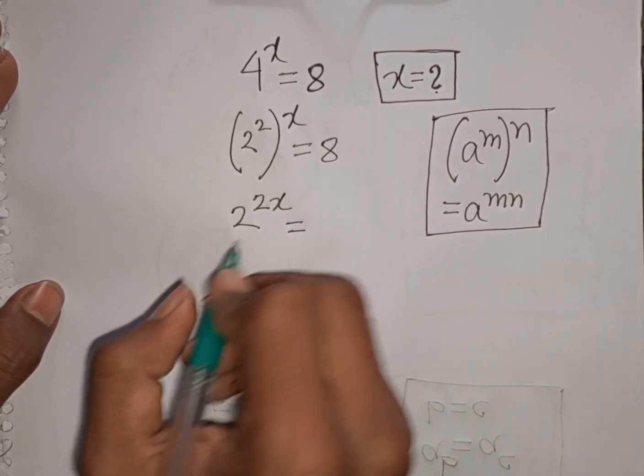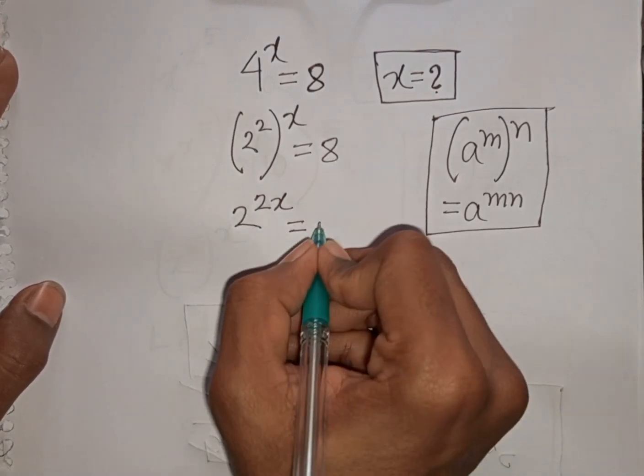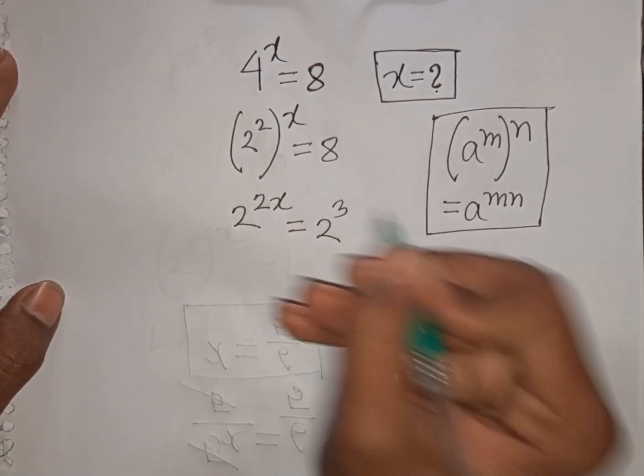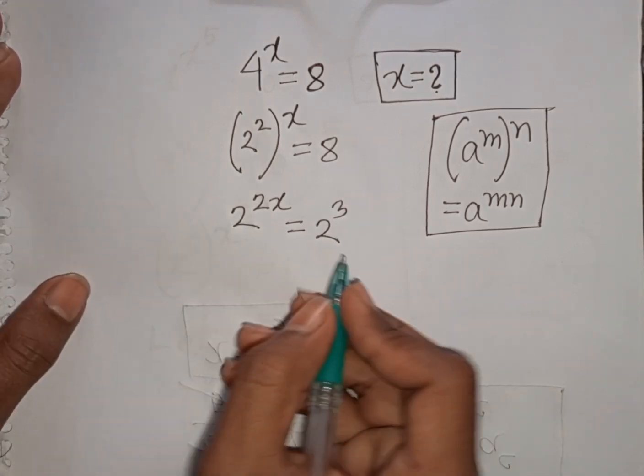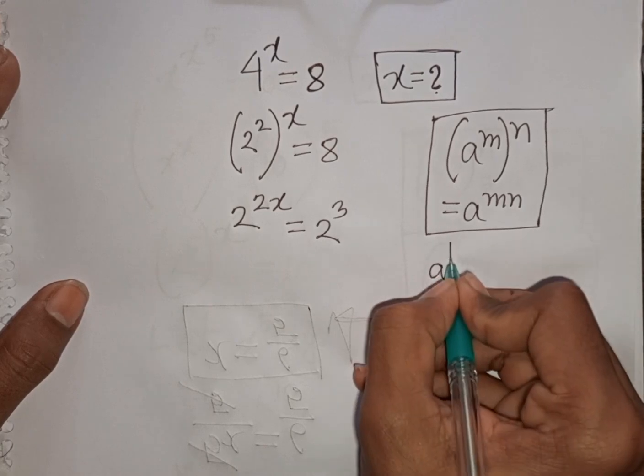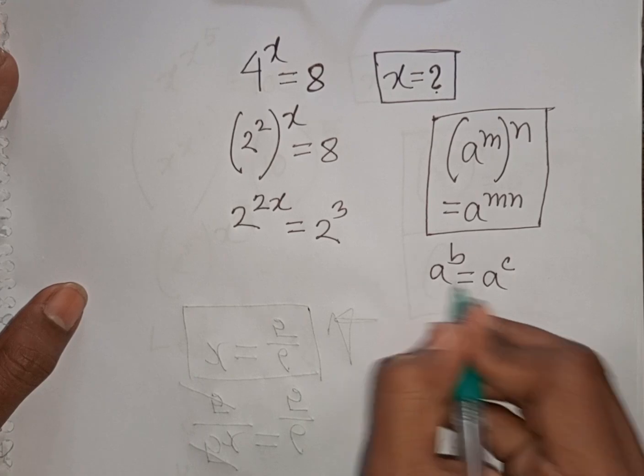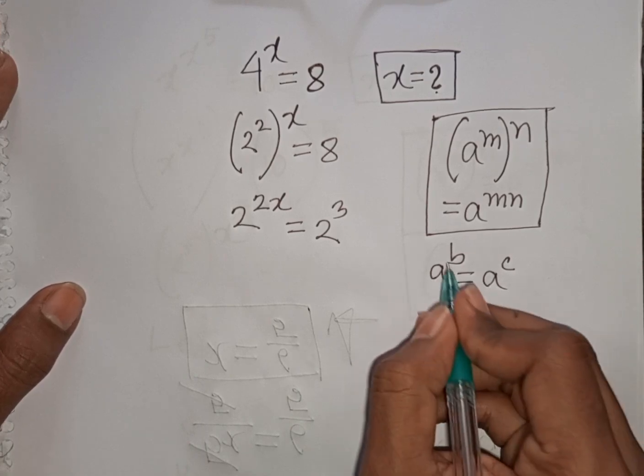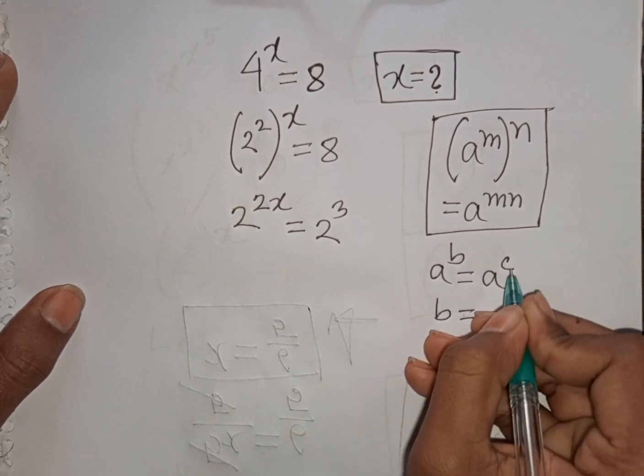Is equal to, we see here base is 2, but here 8, so it can be written as 2 power 3. Now we see the same base, so remember this exponential rule that a power b is equal to a power c, so with the same base a will be cancelled, power will be equal to power, that means b will be equal to c.